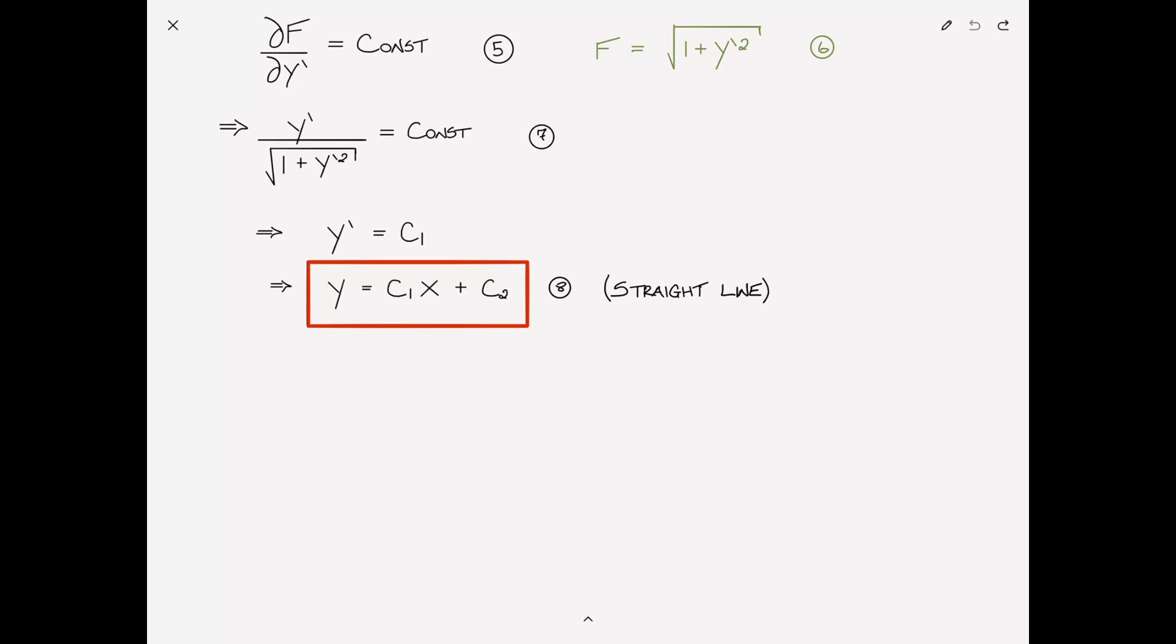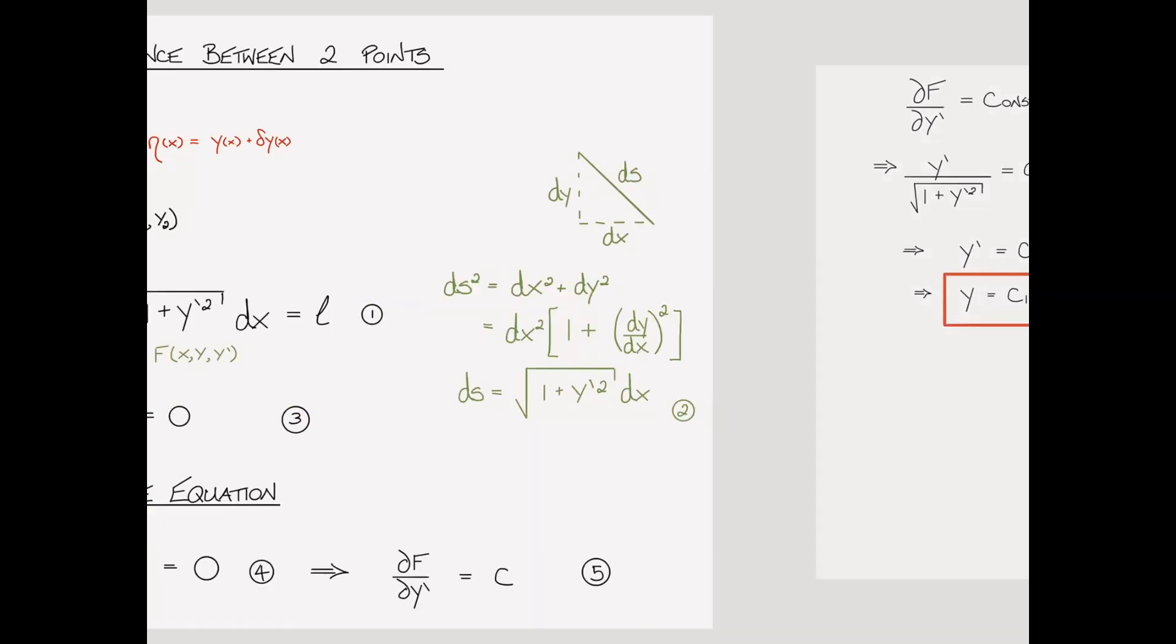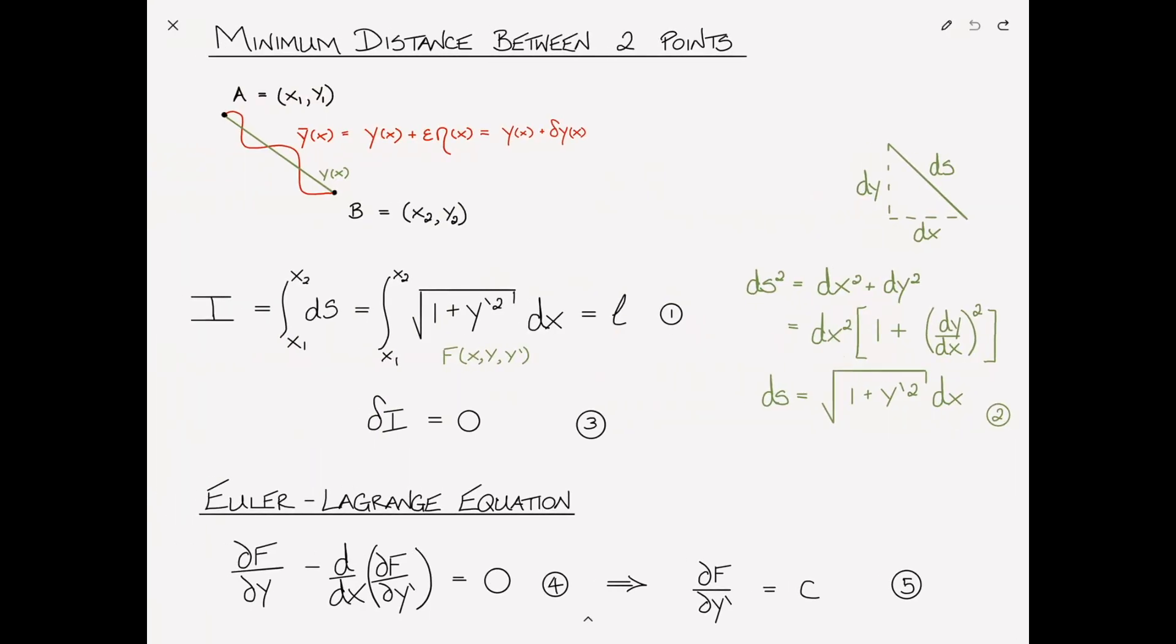Okay, so I know I've just reviewed it, but I'm going to go through this again from the top, just to make sure we're all comfortable with this starter problem. Minimizing the distance, in this case the path length between two points on a plane, a and b,